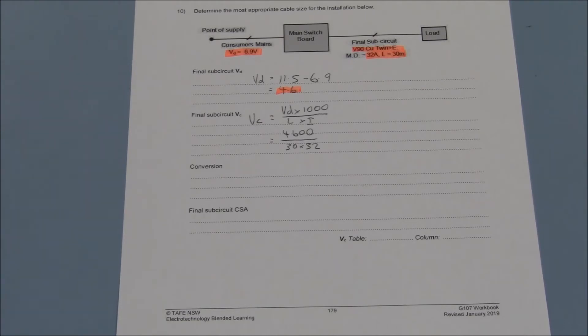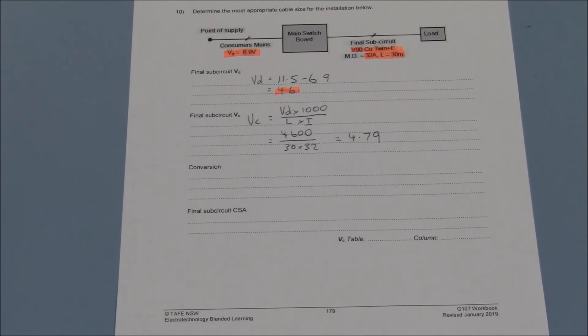Populating our equation as such, we can calculate the value of VC to be 4.79 millivolts per ampere metre.